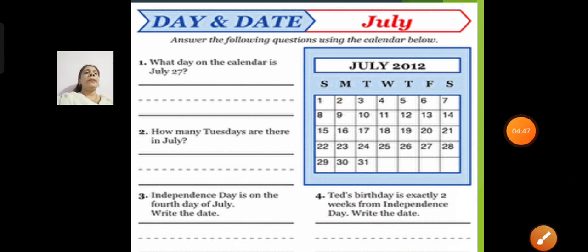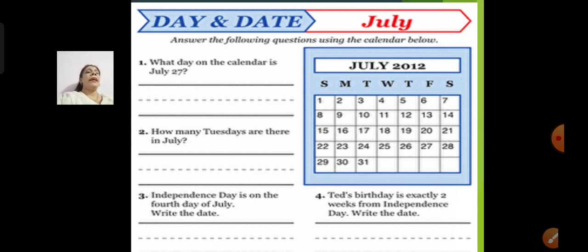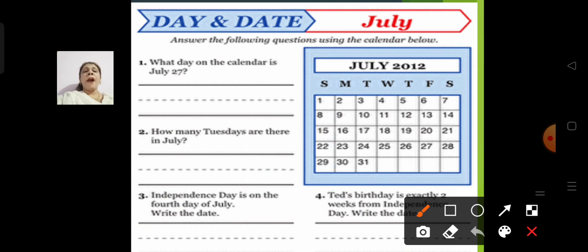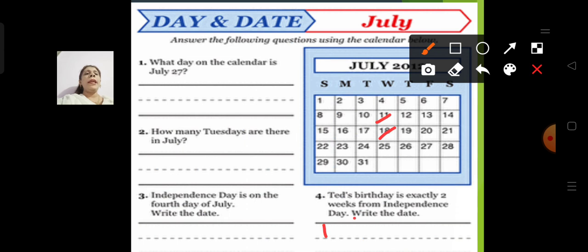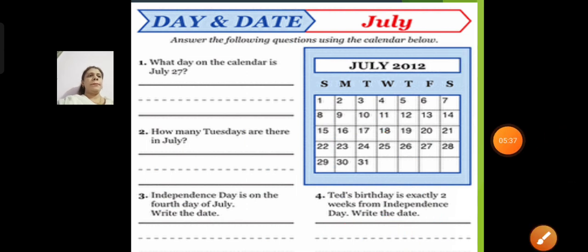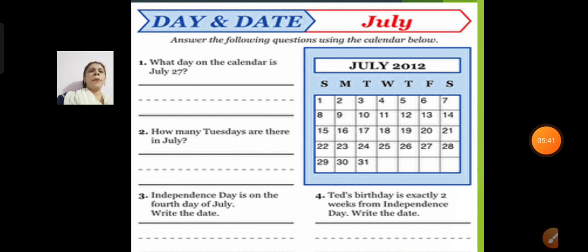Now the 4th question: Ted's birthday is exactly 2 weeks from Independence Day — write the date. Independence Day is on 4th July. Exactly 2 weeks after 4th July: 4th to 11th is 1 week, and 11th to 18th is 2 weeks. So Ted's birthday will be on 18th July.